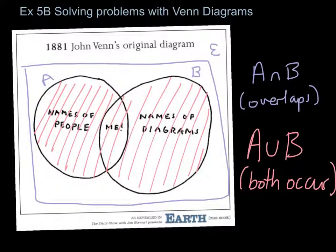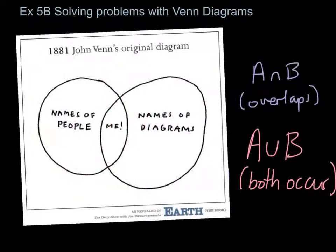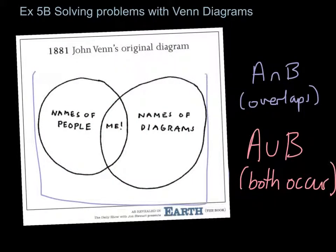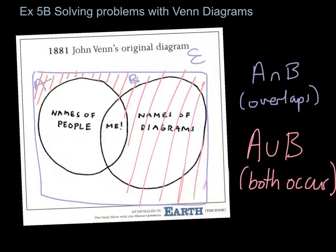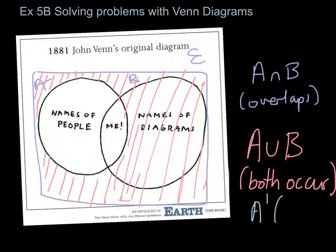Other things from your IGCSE were, let's just draw the box back on, the curly E for entire set, set A, set B. Other ones you could have would be things like this, where we've got everything that's not in that set. So if you look at what I'm shading at the moment, that's everything that's not in set A. Notation we use to describe that would be A', the little dash. It's called the complement of set A, so it's the stuff that's not in A.